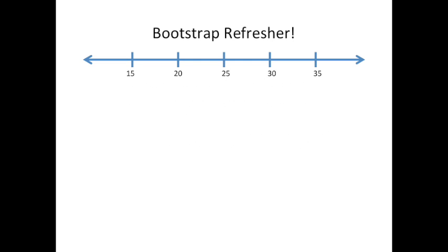Now, even though we just did bootstrapping, your brain might be a little cloudy and you may have forgotten what it was all about. That's why we're going to do a little bootstrap refresher. Imagine we weighed a bunch of female mice — in this case, we weighed 12 of them. We didn't weigh every single female mouse on the planet, just 12.